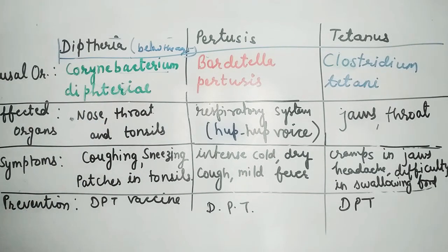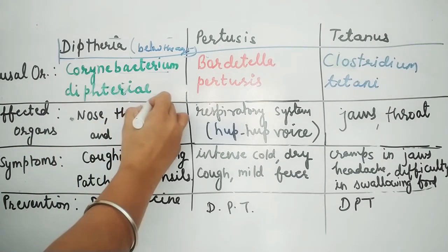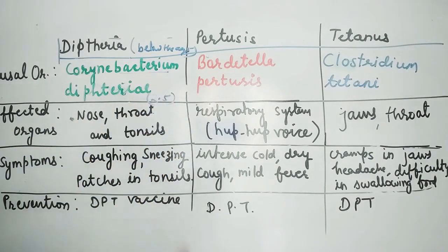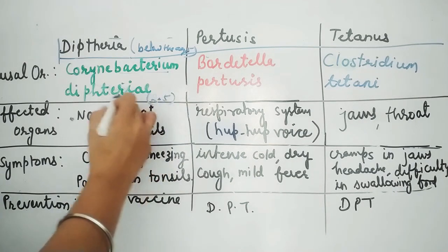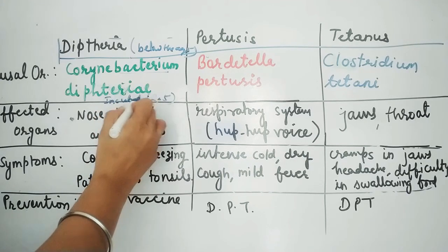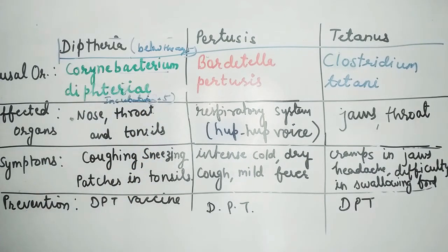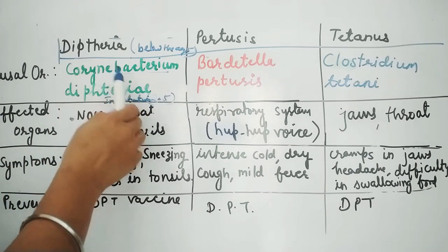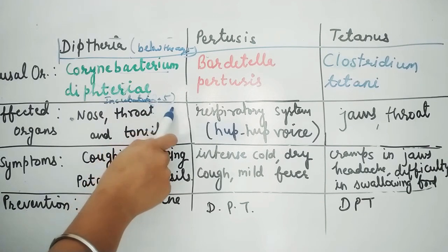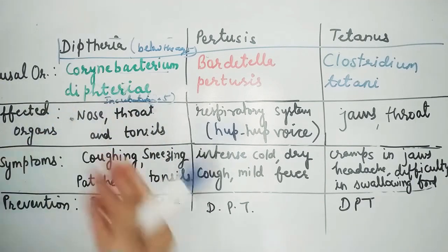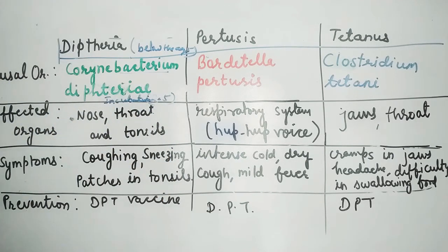The bacteria enters the body and in two to five days it multiplies. This period is called the incubation period. If any pathogen goes into the human body or host, that period is called the incubation period. So the diphtheria incubation period is two to six days, after which its symptoms appear.